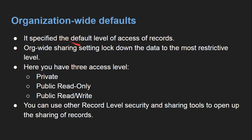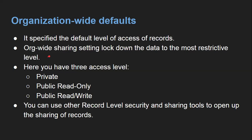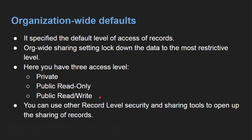Let's understand organization-wide defaults. It specifies the default level of access to records. The org-wide sharing setting locks down data to the most restrictive level. Three access levels are available: private, public read only, or public read/write. You can choose any one as per your requirement. If you have chosen private or public read only and want to open up that security, you can use other record level security and sharing tools.